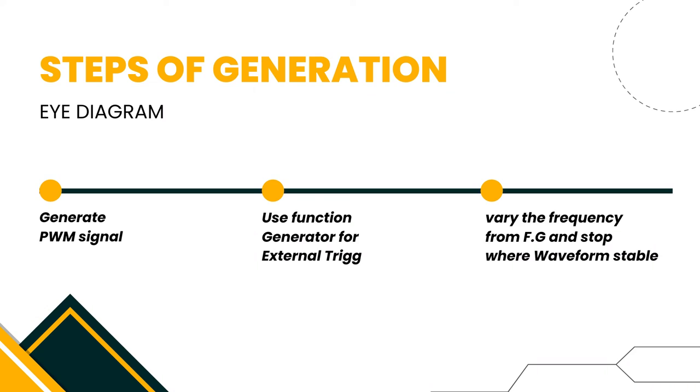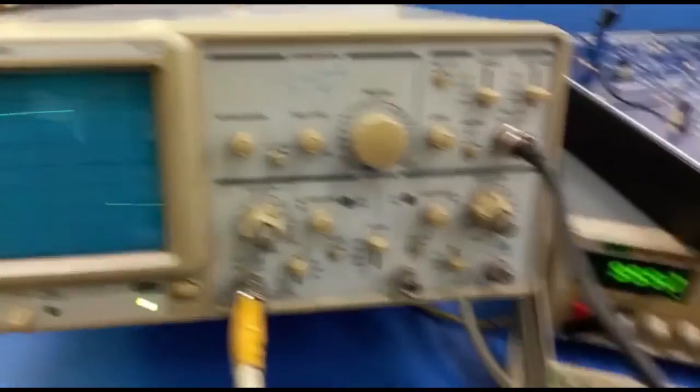After the PWM signal is generated and stable on the oscilloscope, we will use a function generator and apply its external trigger to the oscilloscope, as you can see in the figure.